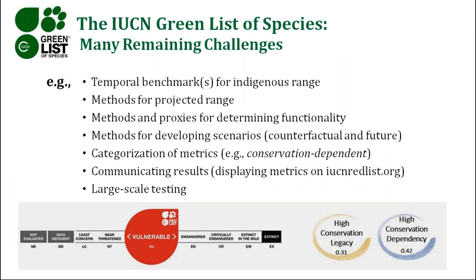The current greenness score shows the degree of recovery of the species and can be very useful for conservation monitoring — following it as a species recovery index would help quantify the degree of recovery through time. Of course, there are many remaining challenges: temporal benchmarks for indigenous range, methods for projected range, functionality, and developing counterfactual and future scenarios — all methodological issues that will continue to be refined over years, just as with the red list. A different set of issues involves categorization — whether to leave metrics as numerical values or put them into categories such as high, medium, and low.